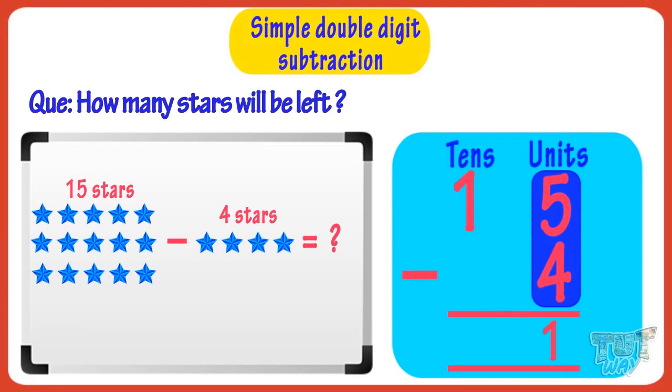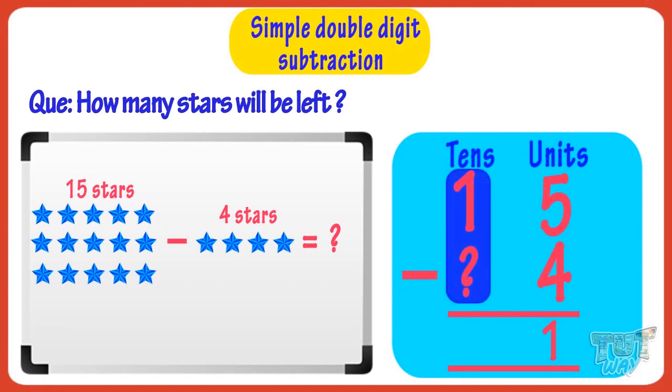Now there is nothing to subtract from 1. So write 1 at the tens place. So we got to know 15 minus 4, you get 11. So 11 stars will be left.